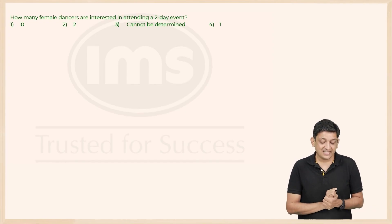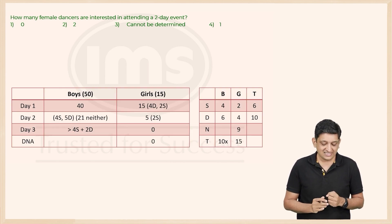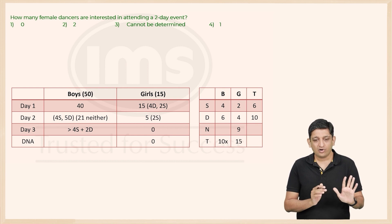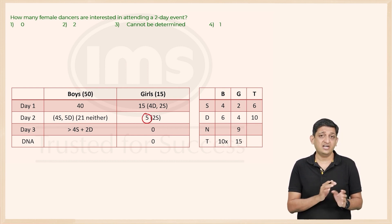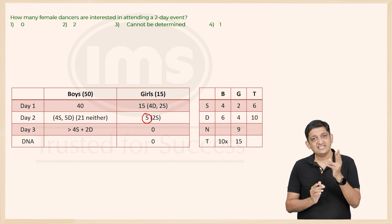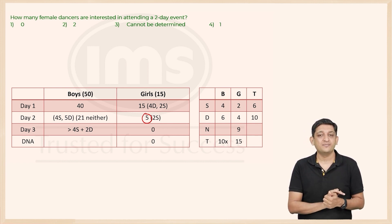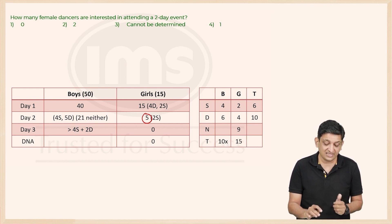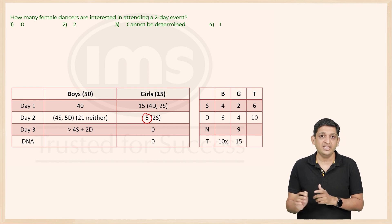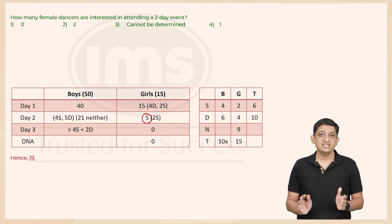Question 5: How many female dancers are interested in attending a two-day event? Out of the 5 girls interested in the two-day event, exactly 2 have a talent — and those 2 are singers, not dancers. Therefore, there are no female dancers interested in attending the two-day event. The correct answer is option 1, that is 0.